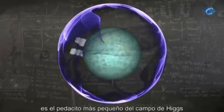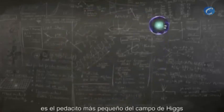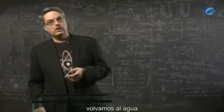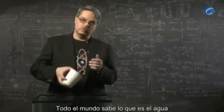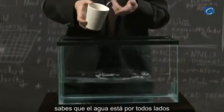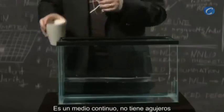The Higgs boson is the smallest bit of the Higgs field. To understand how that works, we should again return to water. Everyone knows what water is. If you're immersed in it, you know that water is everywhere. It's a continuous medium and there are no holes in it.